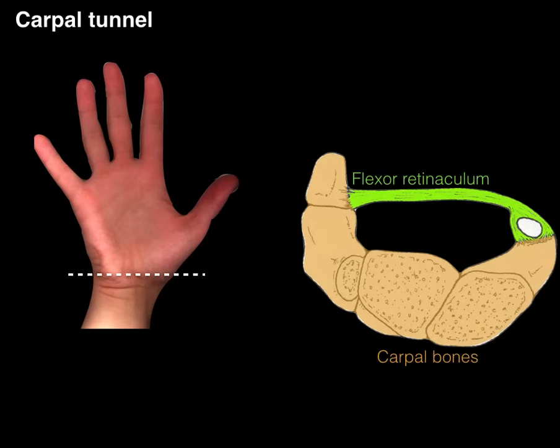Between the flexor retinaculum and the carpal bones lies the carpal tunnel. The carpal bones don't move much — they're solid and anchored together — and the flexor retinaculum is extremely thick, almost feels like bone. So when pressure builds up inside the carpal tunnel, very little stretching can occur.